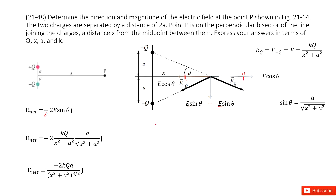Now we input E from the formula, and sine theta is easy to find from the triangle: a is the opposite side and the hypotenuse is the square root of x squared plus a squared. So we input E and sine theta, simplify, and we get the answer. The magnitude is that final term and it points in the negative y-direction. Thank you.